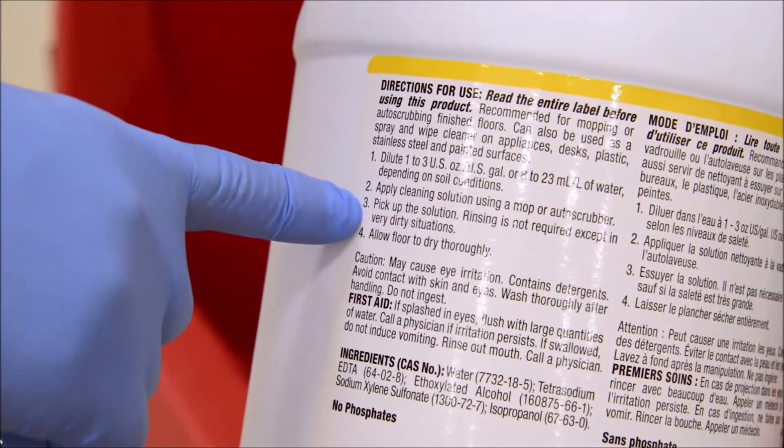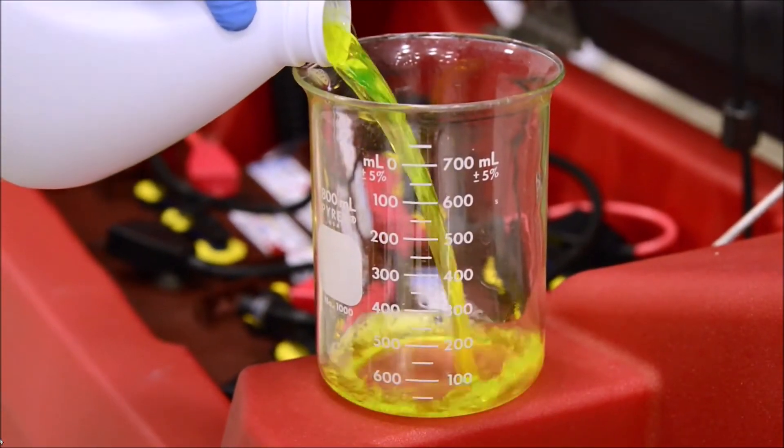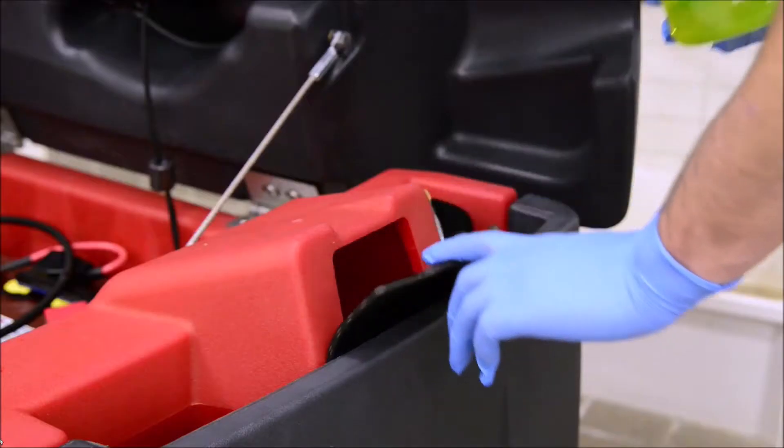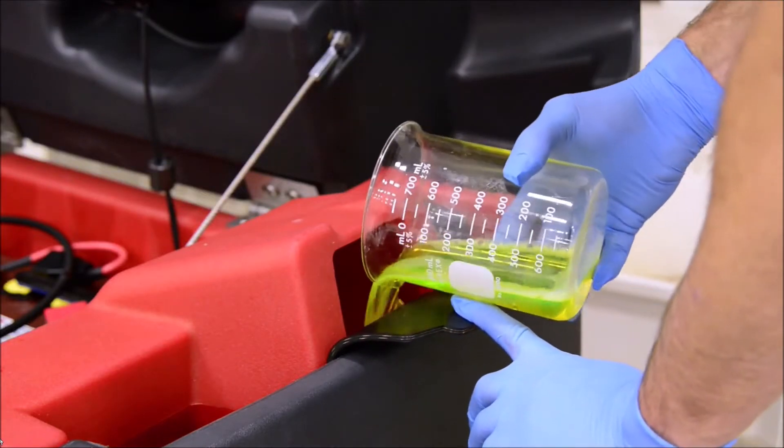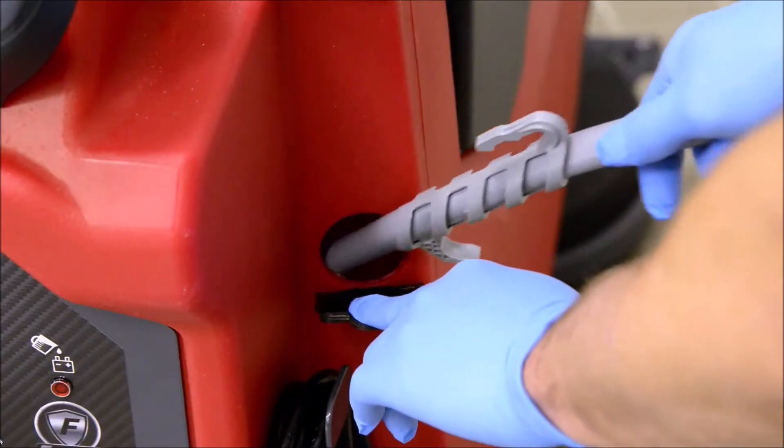Alternatively, if mixing in the solution tank, measure the chemical according to the chemical's recommended dilution for a 25-gallon tank. For ease, pour the chemical in the front fill port first, and then fill the rest of the tank with water using a hose in one of the fill ports.